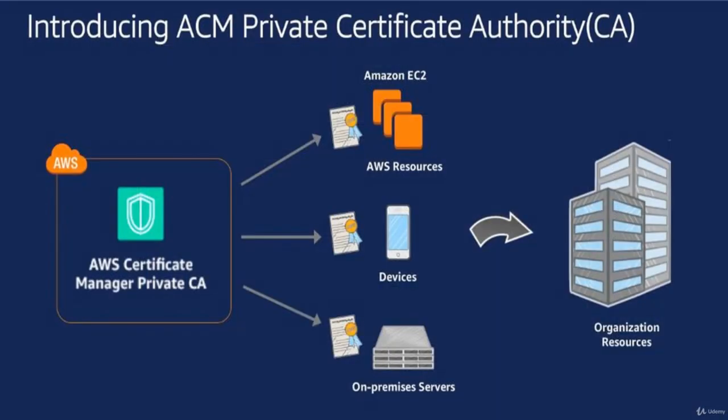You can add a private certificate authority. This shows the flow: you could have EC2 instances or other resources like devices, on-premise servers, and similar. All of these can be managed with a private certificate manager on Amazon Cloud.